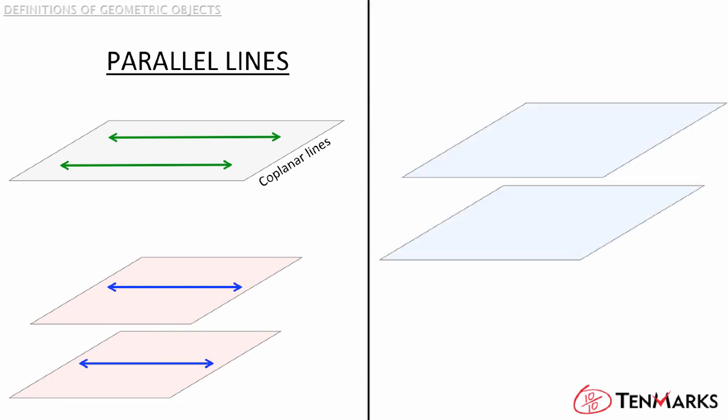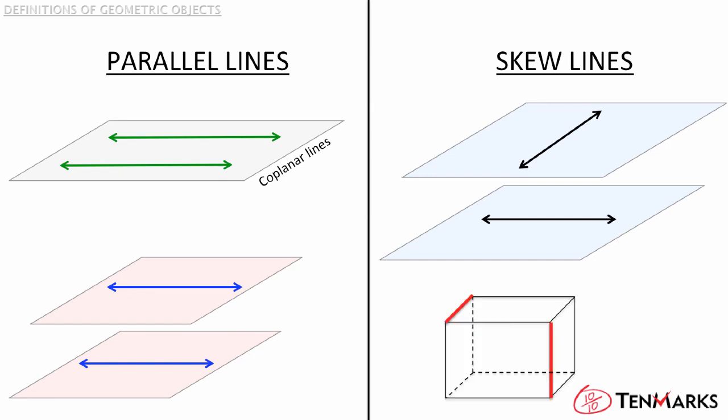If you have a set of parallel planes, would all of the lines between the two planes also be parallel? Take a look at these two lines. They will never intersect but they are not parallel because the distance between them is not always the same. These are called skew lines. Skew lines are those that never intersect but are not parallel. Another good example of skew lines are those on opposite sides of a cube in different orientations. These two red lines are skew because they are not parallel but will never intersect no matter how far out you extend them both.